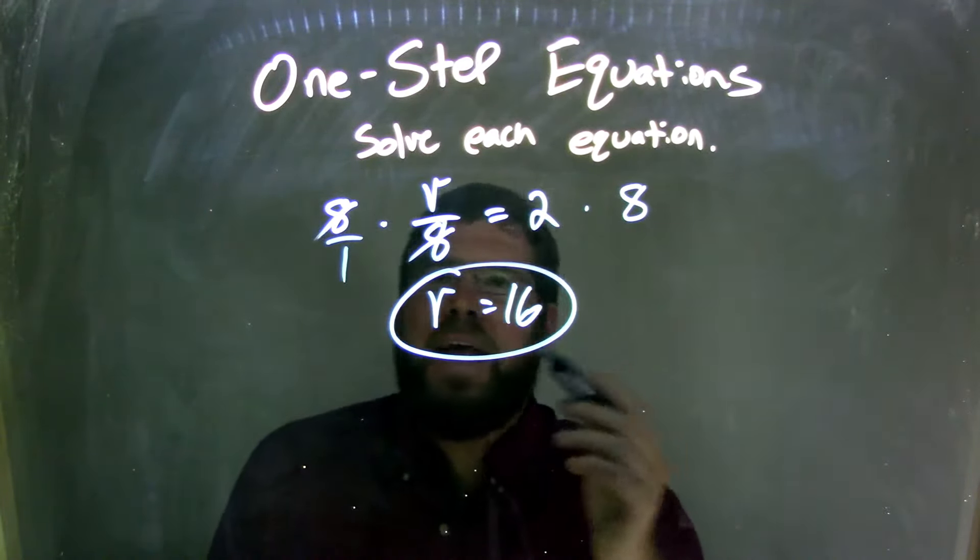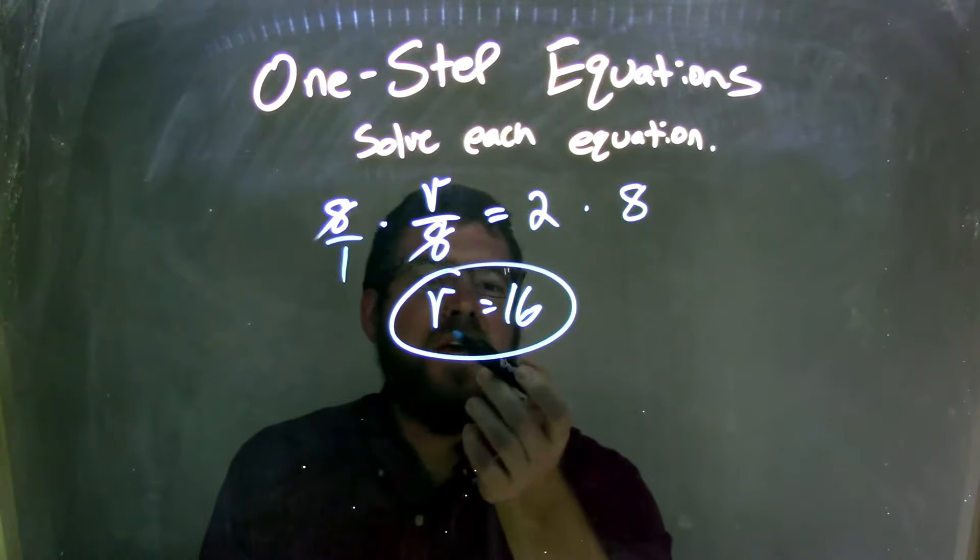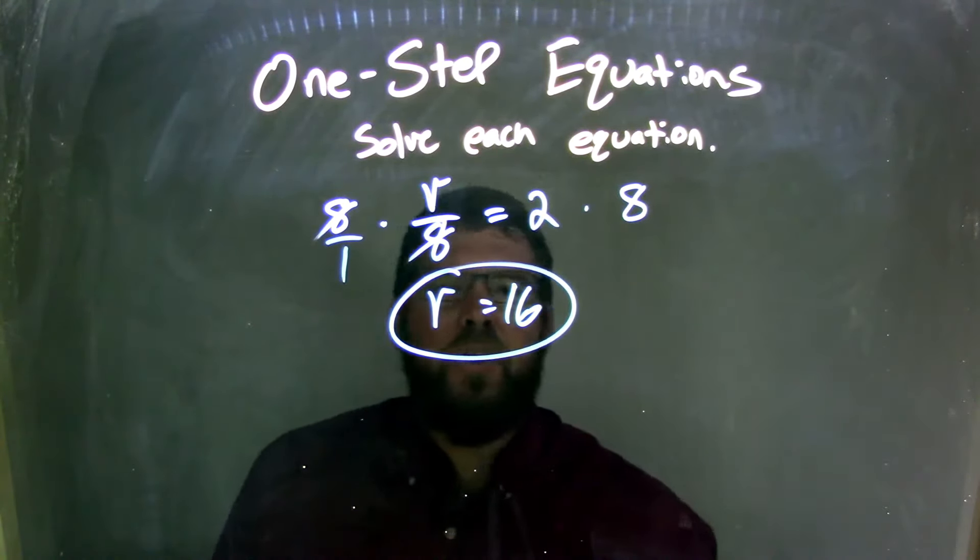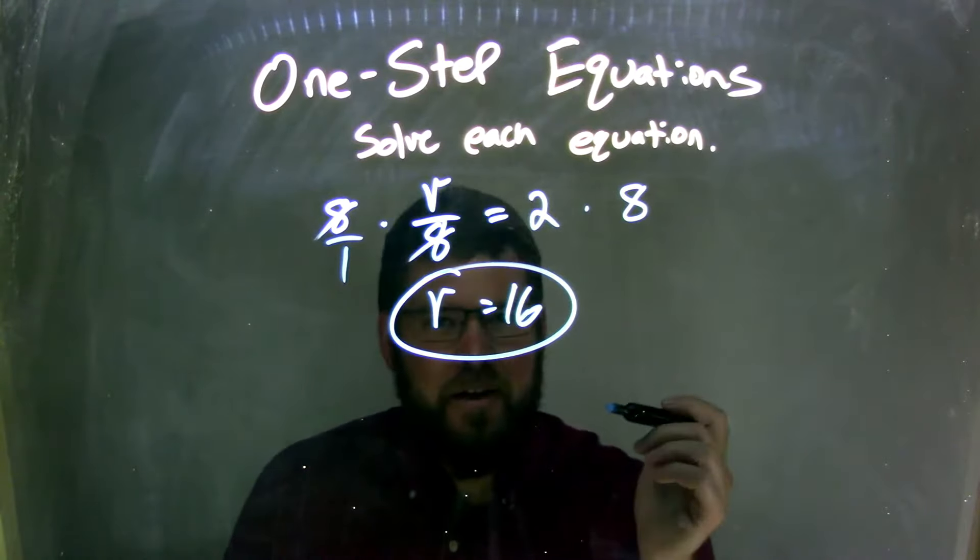Okay, it doesn't really matter. So that cancels out. We're left with just v here, equals 2 times 8, which is 16. So v equals 16 is our final answer.